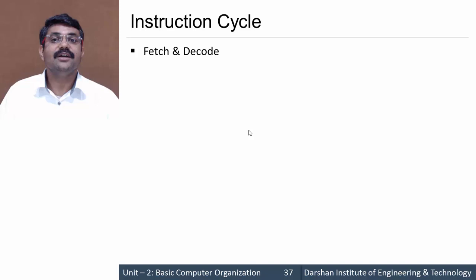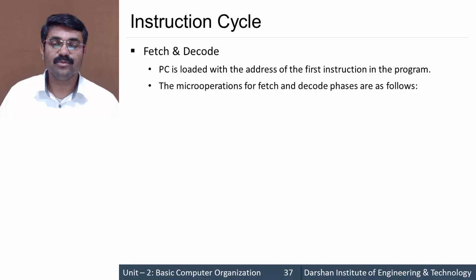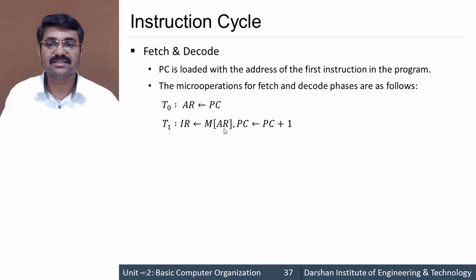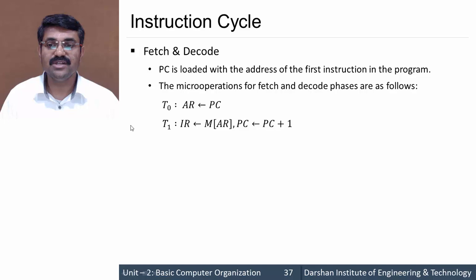Let us see the fetch and decode steps individually. There is one register named PC, the program counter, which stores the address of the next instruction to be executed. The micro-operations are as follows: at time t0, the content of the program counter — that is, the address of the next instruction — is transferred to the address register. At time t1, the content of memory pointed to by the address register is transferred to the IR, and PC is incremented by 1, since we now need to load the address of the next instruction.